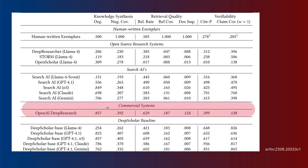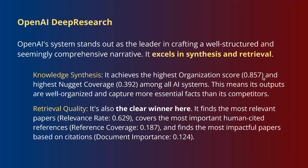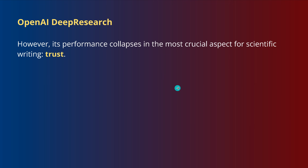Let's look at the commercial system before going to the pure search AI commercial systems. They tested OpenAI Deep Research, considered one of the best. If you look at knowledge synthesis, wow — really impressive, 0.85. OpenAI Deep Research really excels in synthesis and retrieval. We have the highest organization score of 0.85, and the highest nugget coverage of 0.39. Outputs are well-organized and capture the essential facts better than competitors. For retrieval quality, also the winner — relevance rate of 0.62, covering the most important human-cited references with a reference coverage of 0.18, and finding the most impactful papers at 0.1.